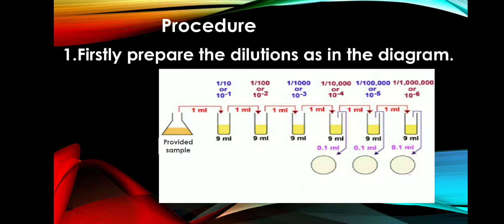From this, take 1 ml and add it to 9 ml of sterile saline. This gives a dilution of 10 to the power of minus 2. Likewise, dilutions are prepared as 10 to the power of minus 3, 10 to the power of minus 4, 10 to the power of minus 5, and 10 to the power of minus 6.